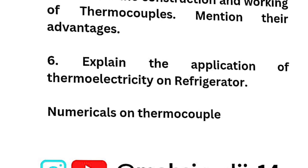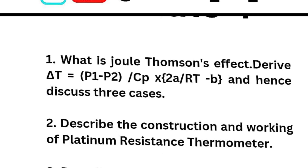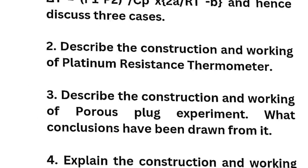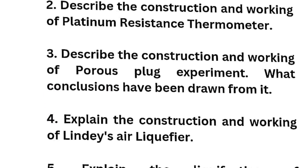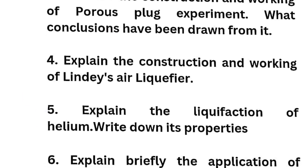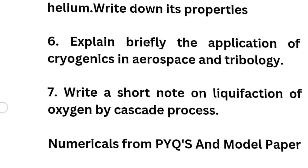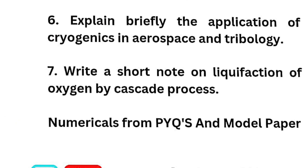Module 4 topics: what is the Joule-Thomson effect — derive ΔT = (P1 − P2)/Cp × (2a/RT − b) and discuss three cases; describe the construction and working of the platinum resistance thermometer; describe the construction and working of the porous plug experiment and the conclusions drawn from it; explain the construction and working of Linde's air liquefier; explain the liquefaction of helium and write down its properties.